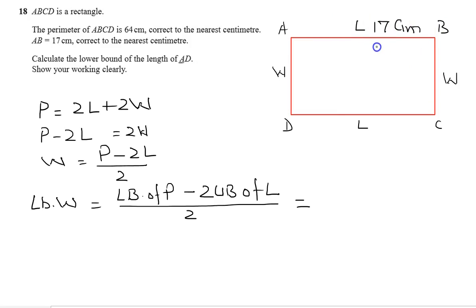The perimeter is 64, we need the lower bound of the perimeter, that is 63.5.